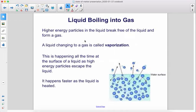Higher energy particles in the liquid break free of the liquid and form a gas. A liquid changing to a gas is called vaporization. This is happening all the time at the surface of a liquid as high energy particles escape. It happens faster as the liquid is heated.